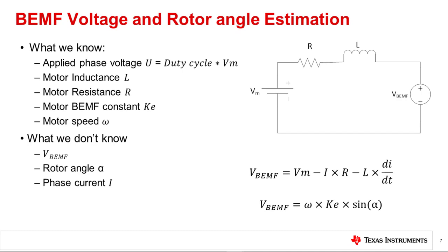We can solve this issue by adding a way to read the current of the phase. There are many ways we can do this. One way is by adding a shunt resistor. Using the shunt resistor and an ADC, the current of the phase can be read. This allows us to calculate the back EMF voltage and the rotor position using these two equations.